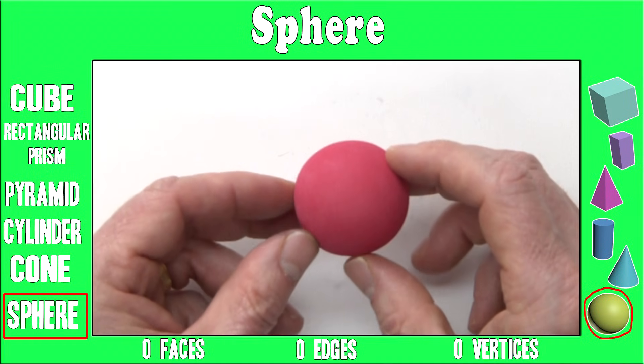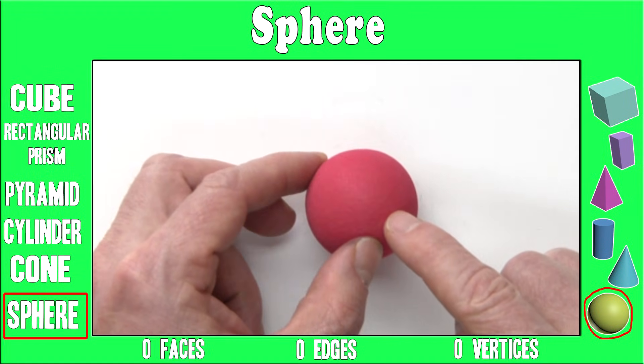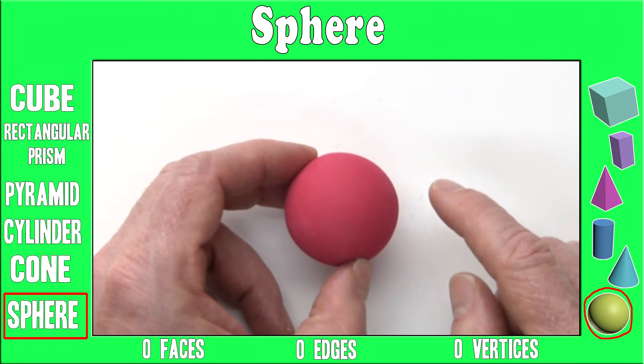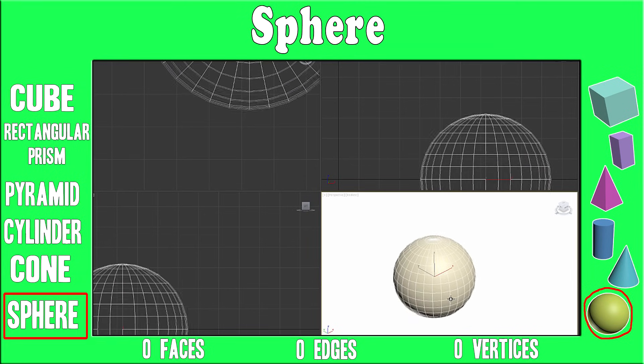Sphere. Zero faces, zero edges, and zero vertices. A sphere is like a ball.